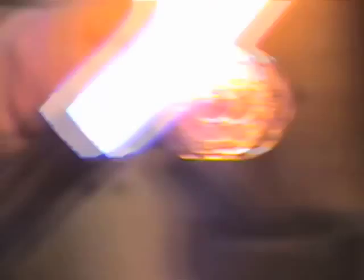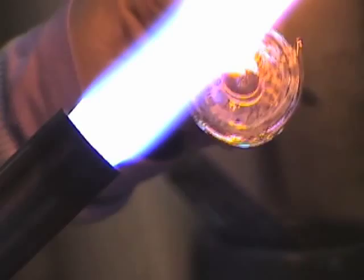The tip of the blowpipe is first preheated, then dipped into the molten glass in the furnace. The molten glass is gathered onto the blowpipe, in much the same way that honey is picked up on a dipper.